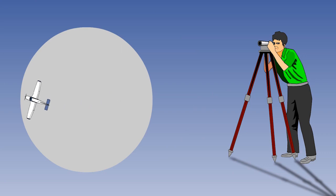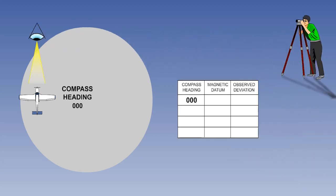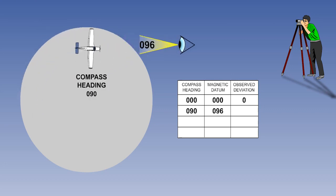To work out the amount of deviation being experienced, the aircraft's magnetic compass reading is compared with a magnetic datum compass. The comparison process is known as the compass swing, and the compass swing is carried out on an airfield in a location specifically designed for this operation. We can see the principle of the compass swing here. Initially, the datum compass and the aircraft compass are aligned with each other. The aircraft is then turned through 90 degrees, the compass heading is compared with the datum compass reading, and the observed deviation recorded.